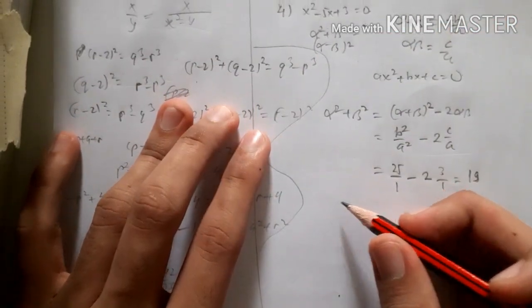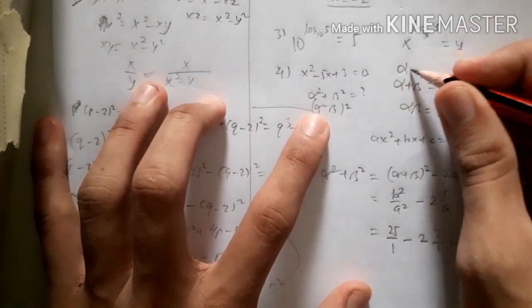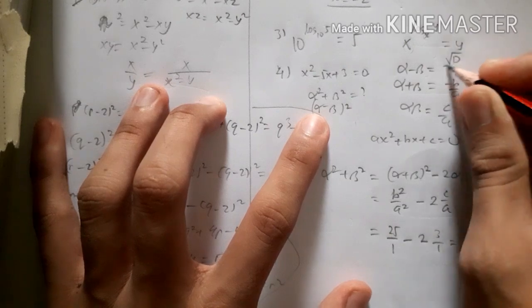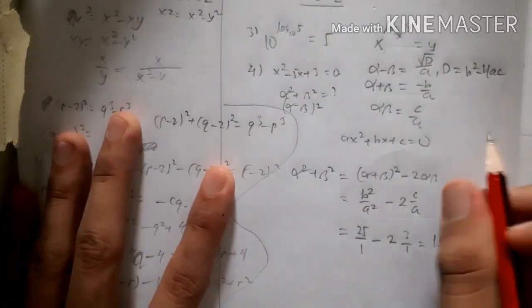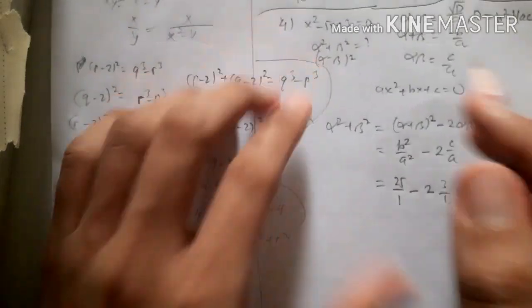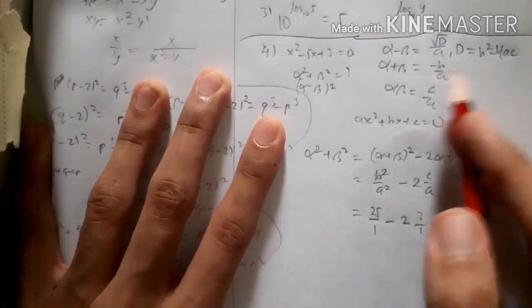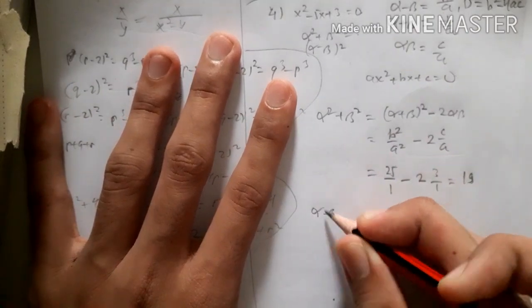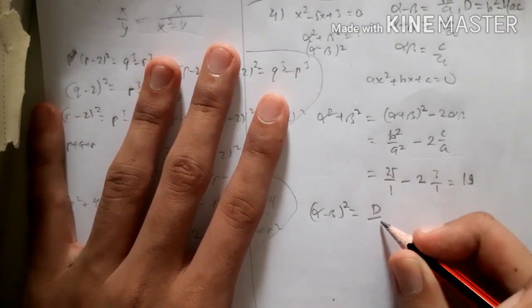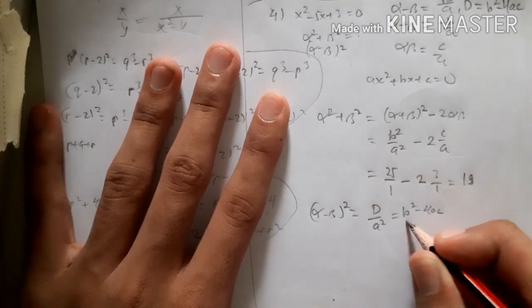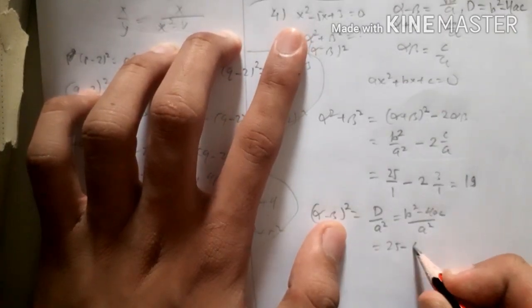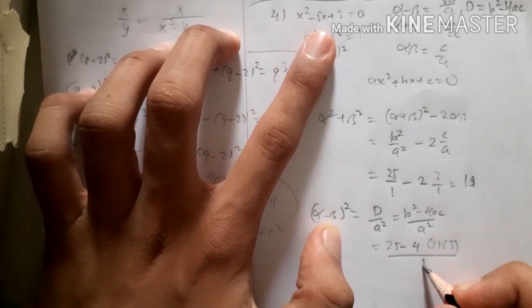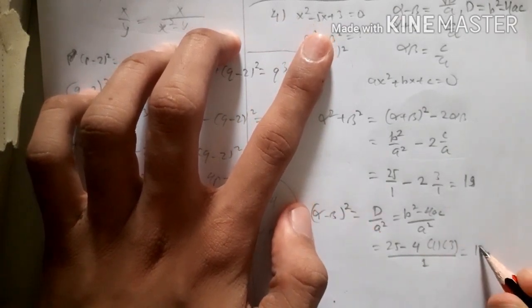For alpha minus beta, use the formula: alpha minus beta equals the square root of the discriminant over a. The discriminant is b squared minus 4ac. So that is b squared minus 4ac over a squared, which gives 25 minus 12 equals 13. So the answer for number 4 is 13.